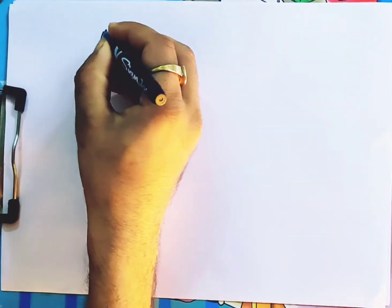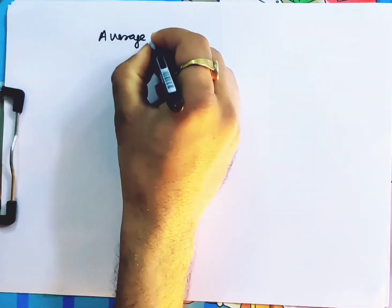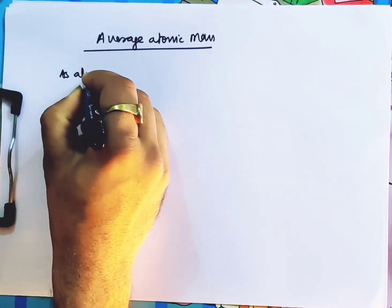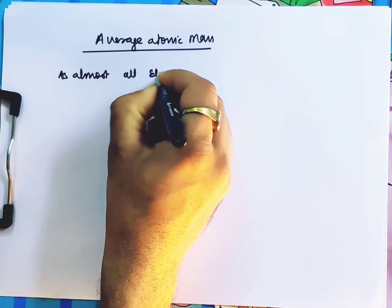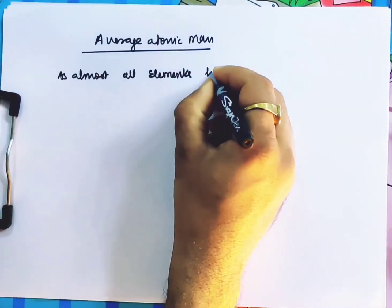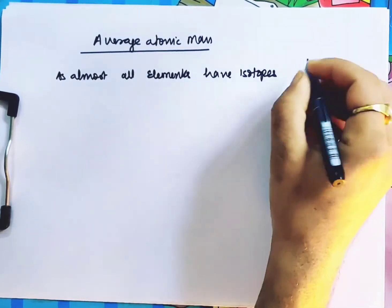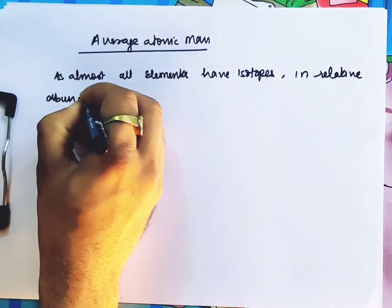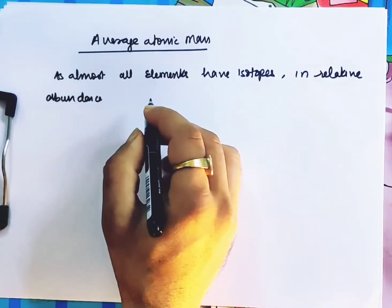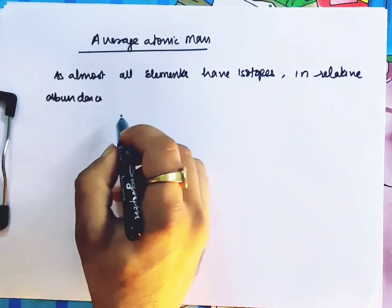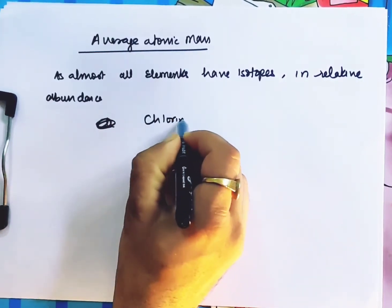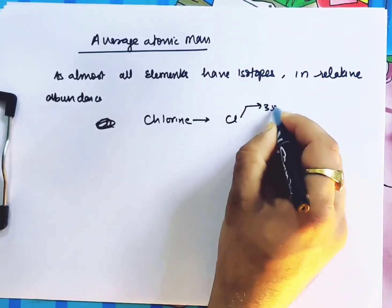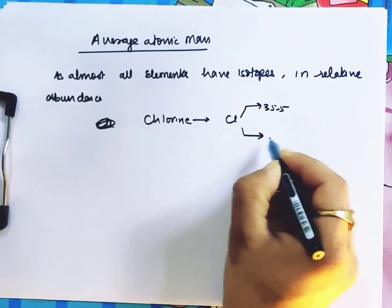Now let's talk about average atomic mass. Almost all elements have isotopes in relative abundance. Let's talk about chlorine. Cl has an atomic mass of 35.5, sometimes 37 — it's both.